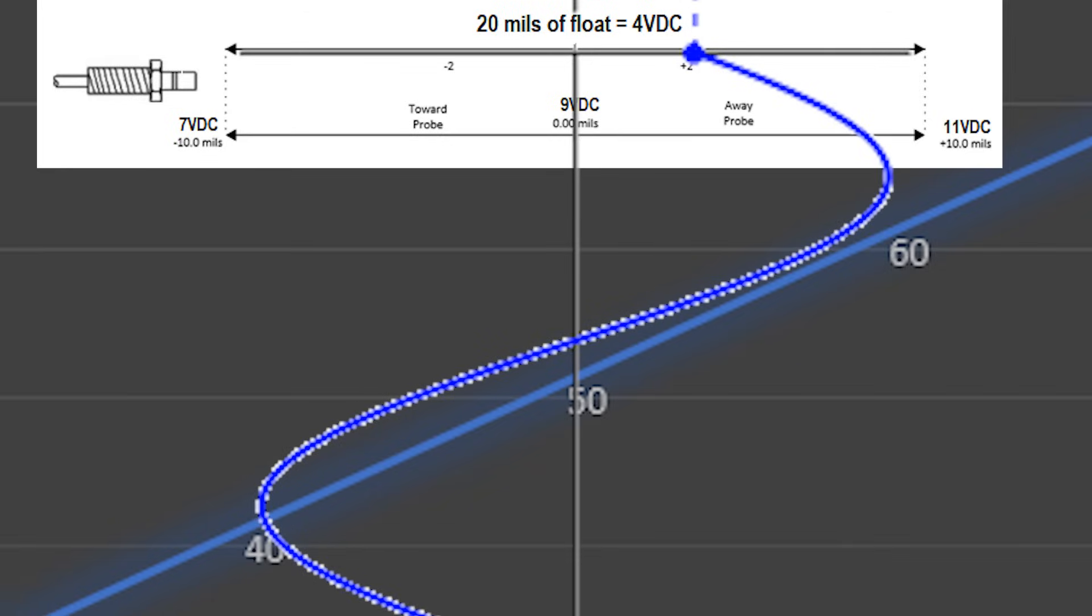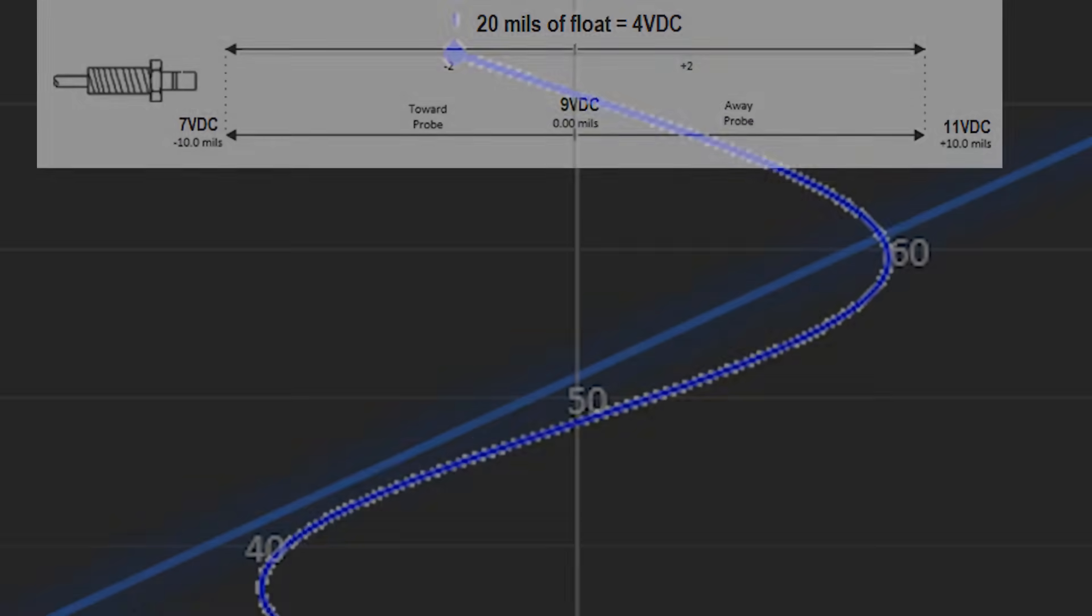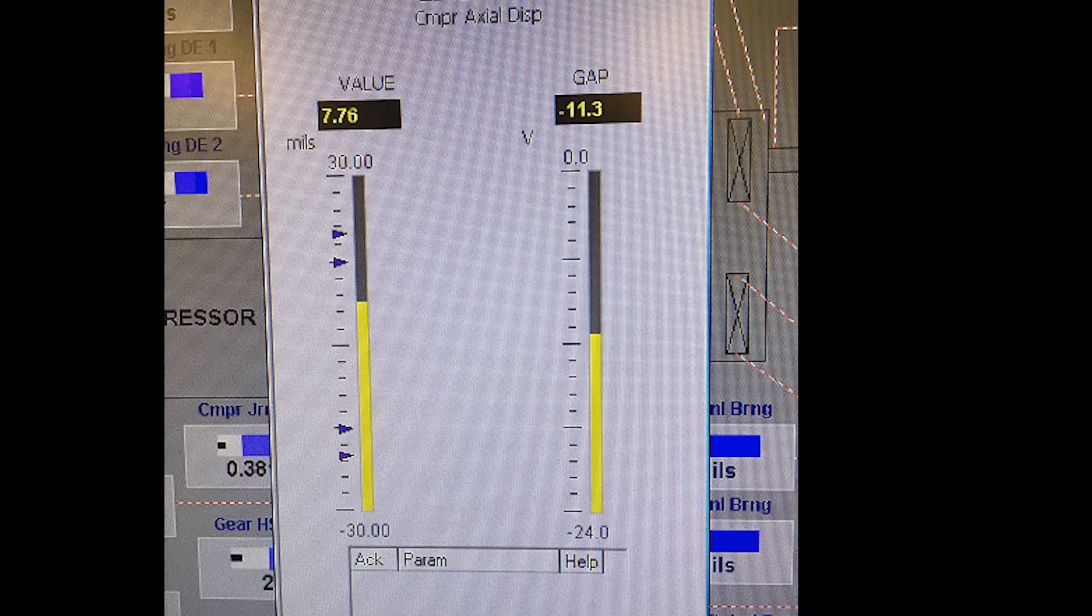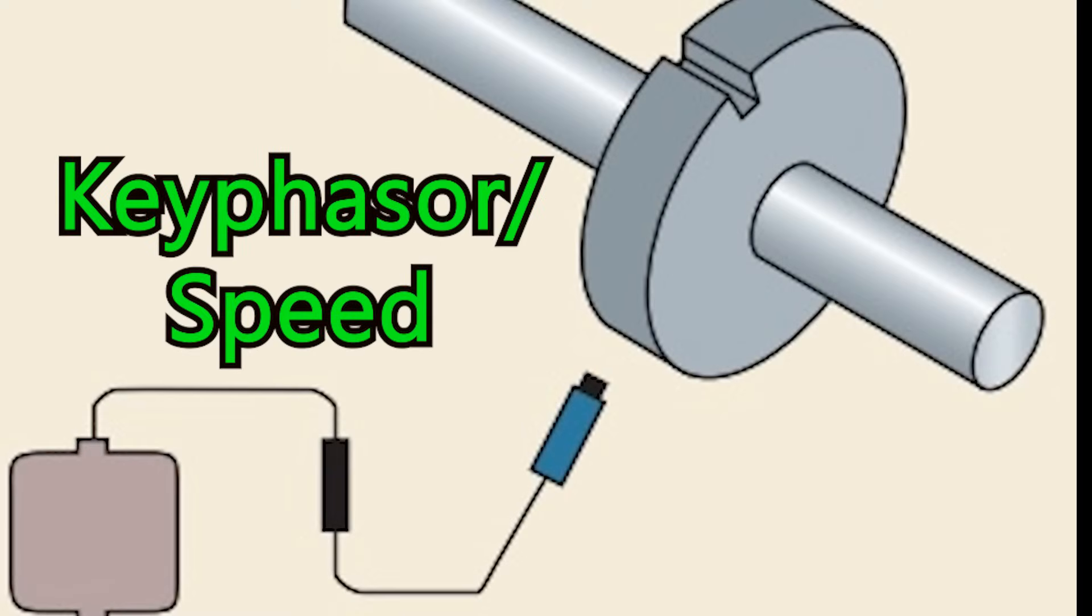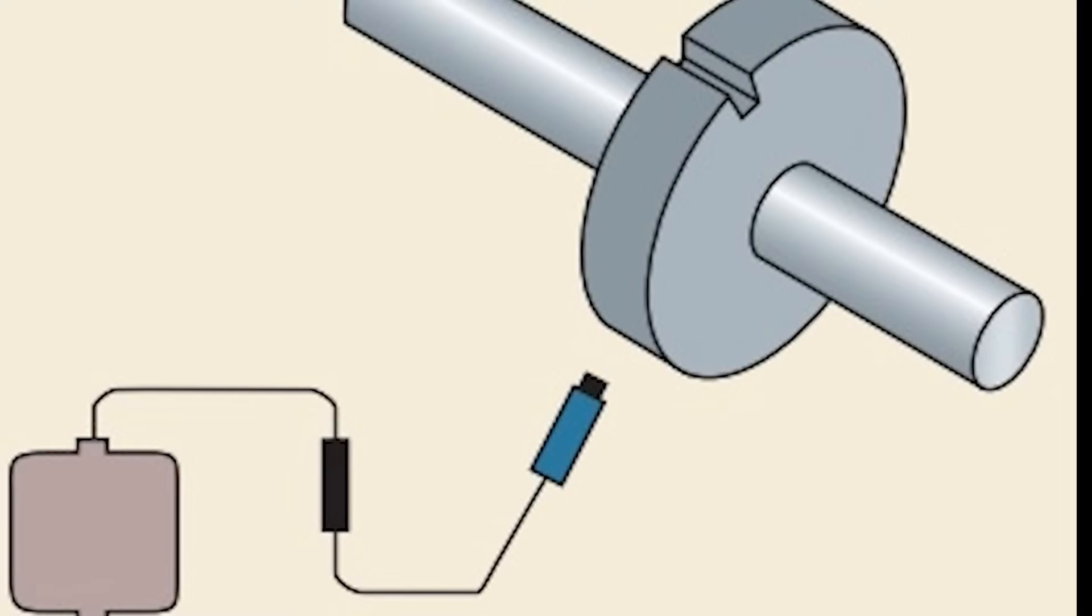This is detected by the proximity monitoring card. Alarm points are established to provide warning if the amount of movement has exceeded the equipment limits. Another use of this same equipment is the monitoring of rotation speed.